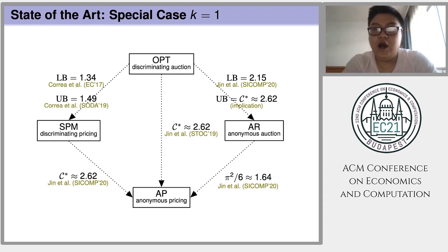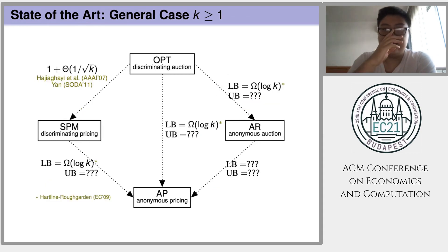For the two unclosed bounds, the one between OPT and SPM and OPT and AR, the last five years have seen substantial progress on them. And by now, although there is some gap here, both bounds are fairly well-understood. In the general case that k is maybe greater than 1, little progress has been made.